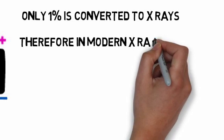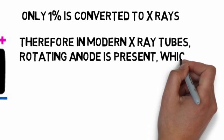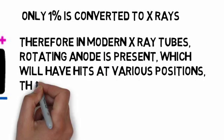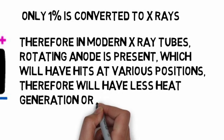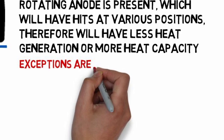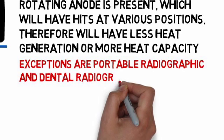Therefore, in modern X-ray tubes, rotating anode is present which will have hits at various positions. Therefore, it will have less heat generation or more heat capacity. Exceptions are portable radiographic and dental X-rays.